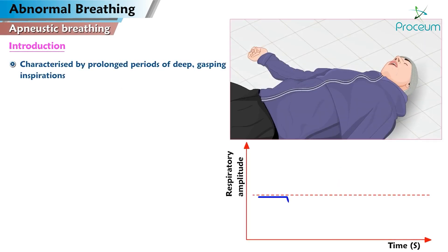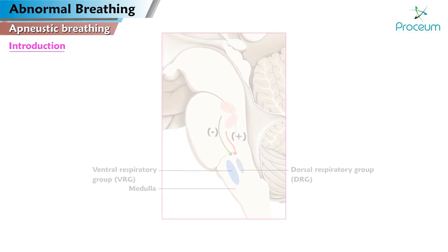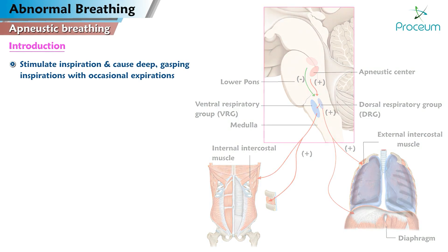Apneistic breathing. Introduction. It is characterized by prolonged periods of deep gasping inspirations interrupted by occasional and insufficient expiration, brought on by elastic recoil of the lung. The apneistic center is located in the lower pons. It acts to stimulate inspiration and can cause deep gasping inspirations with occasional expirations. Apneistic breathing involves repetitive gasps with pauses at full inspiration lasting a few seconds.